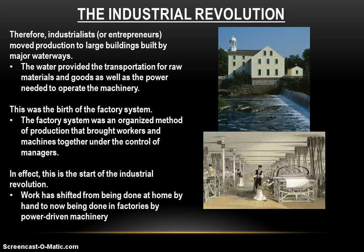The birth of the factory system is really the birth of the Industrial Revolution, because work has officially shifted from being done at home by hand to now being done in factories by power-driven machinery. That's really the definition of the Industrial Revolution: the shift of work being done at home by hand to being done by power-driven machinery in factories. It happens because of innovation — because there's a demand for wool cloth, and we innovate to meet that need. The result is the Industrial Revolution in England, and the world is never going to be the same after this.